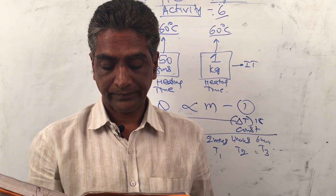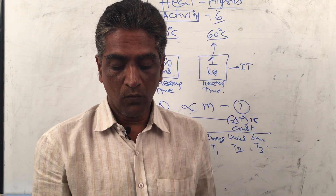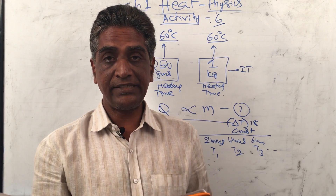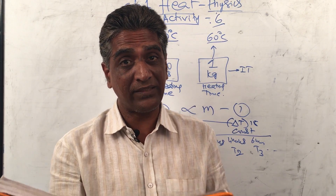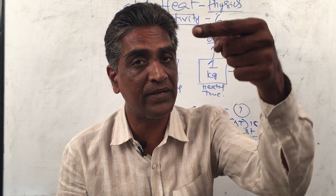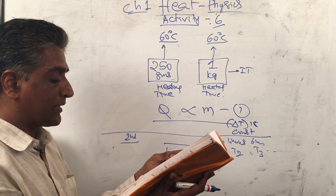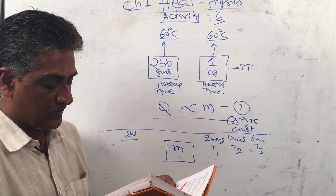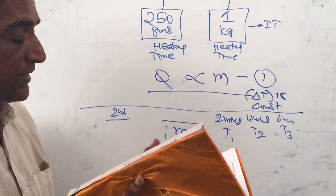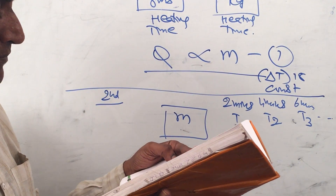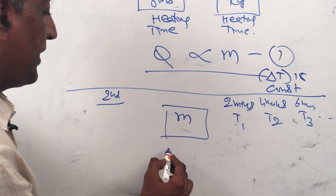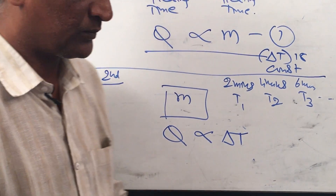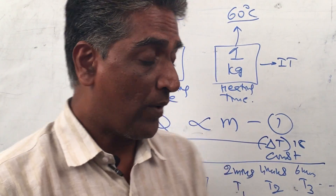Note the temperature every two minutes. The temperature will rise. You will notice that the change in temperature rise with time is constant. That means for the same mass of water, the change in temperature is proportional to the amount of heat Q absorbed. Q is directly proportional to delta T when m is constant.